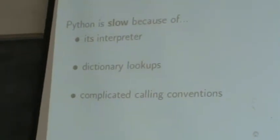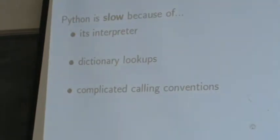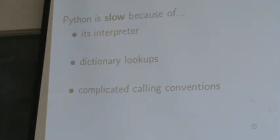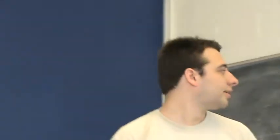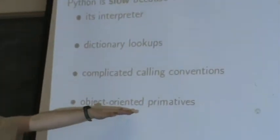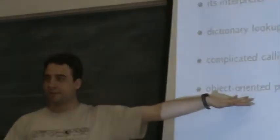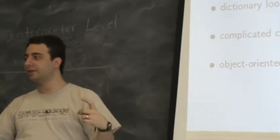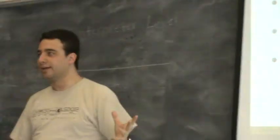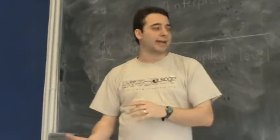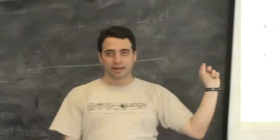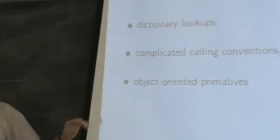So another thing, Python has complicated calling conventions. When you call a function, you can give it optional arguments, you can give it arguments that have names. This slows things down. And then the other thing is, everything is an object. Which is very nice from a programmer's point of view. But sometimes, if I have 32 bits that I want to treat as an integer, I don't want to wrap this in some huge complicated object that has to do memory management and all that kind of stuff.